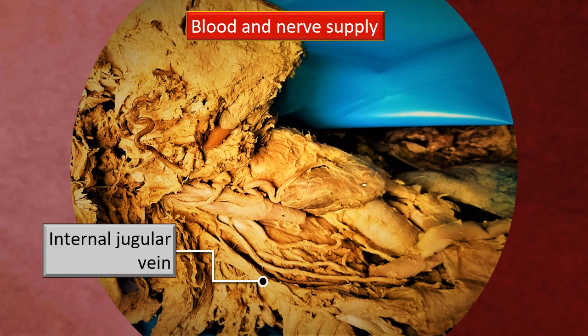The internal jugular vein is identified again because venous drainage has to be covered — the internal jugular is the principal vein into which the thyroid drains. In contrast to the arteries, there are three veins: the superior, middle, and inferior thyroid veins, draining either into the internal jugular or, at most, into the brachiocephalic vein.